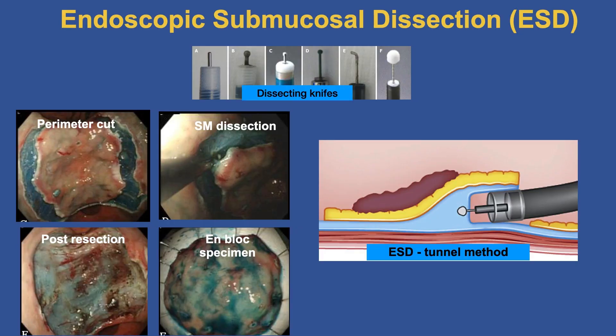Submucosal dissection is a completely different procedure — very tedious, very labor-intensive, very time-consuming — but it allows us to get an en bloc resection. We have various sophisticated dissecting knives, all developed in Japan where ESD was developed. The principle is simple: we make a cut around the perimeter of the tumor, dissect under the tumor, and then we have our en bloc specimen. We often use the tunnel method, actually tunneling underneath the tumor with our endoscope. So it's dissection, versus the term resection, which is done with a snare.